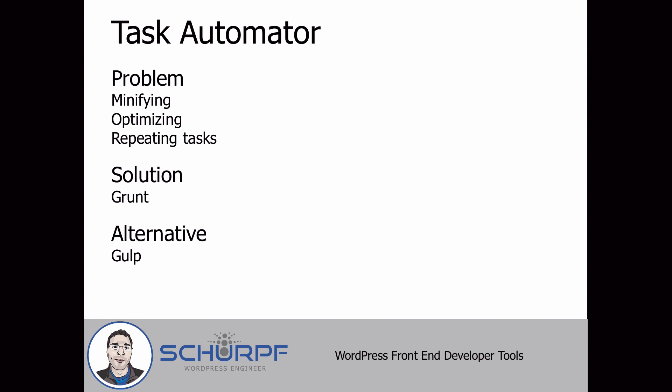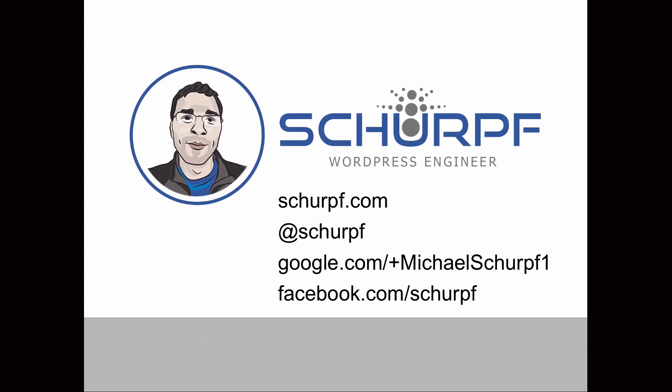Grunt is my preferred solution for task automation, with Gulp as an alternative. There are probably others out there, but Grunt is by far my preferred solution. There are lots of tasks already available so you don't have to reinvent the wheel.